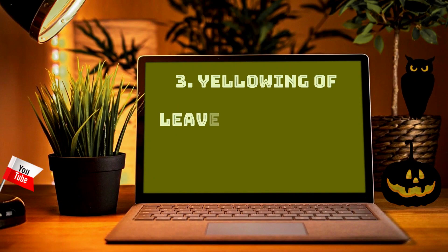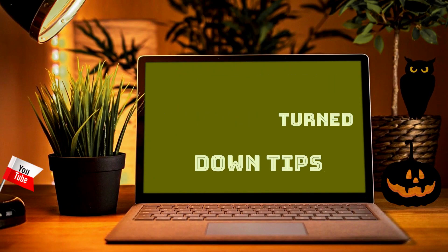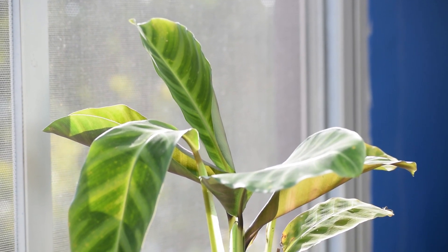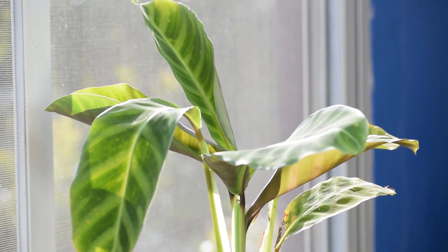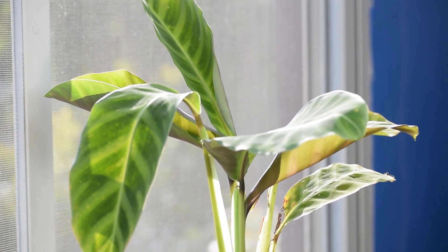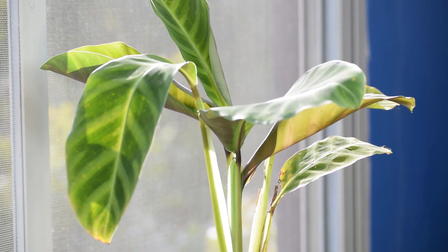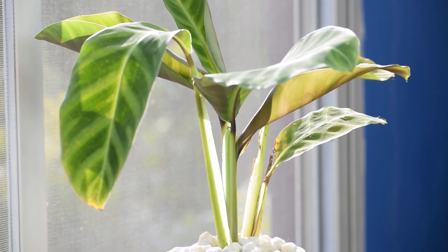Number three: yellowing of leaves and turned-down tips. Excessive nitrogen takes away the water from the soil, leaving the salt behind, which gives the plant a burnt look with yellow foliage and turned-down, clogged tips.